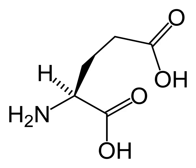Glutamate is the most prominent neurotransmitter in the body, and is the main excitatory neurotransmitter, being present in over 50% of nervous tissue. Glutamate was initially discovered to be a neurotransmitter in insect studies in the early 1960s. Glutamate is also used by the brain to synthesize GABA, gamma-aminobutyric acid, the main inhibitory neurotransmitter of the mammalian central nervous system. GABA plays a role in regulating neuronal excitability throughout the nervous system and is also directly responsible for the regulation of muscle tone in humans.